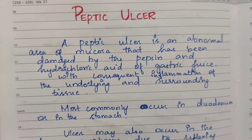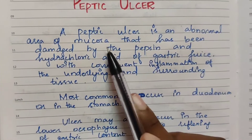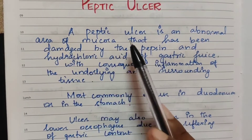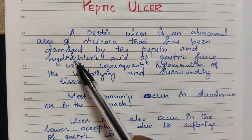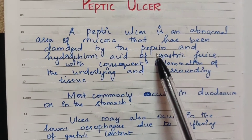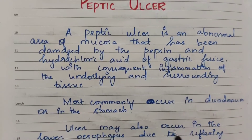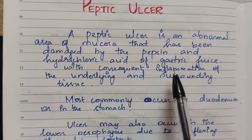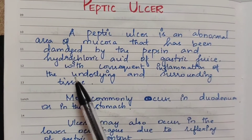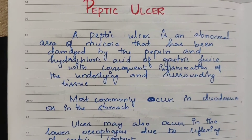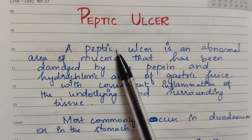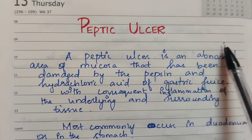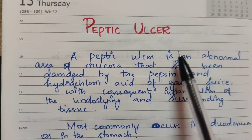A peptic ulcer is an abnormal area of mucosa that has been damaged by pepsin and hydrochloric acid of gastric juice, with consequent inflammation of the underlying and surrounding tissue.